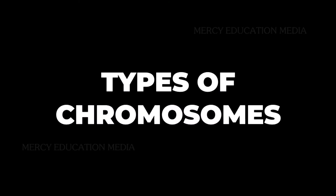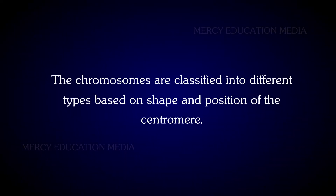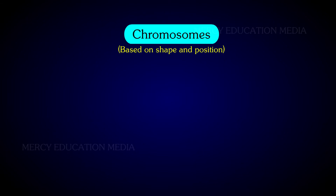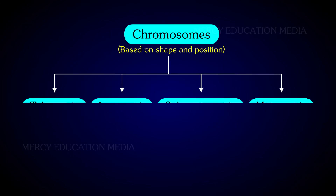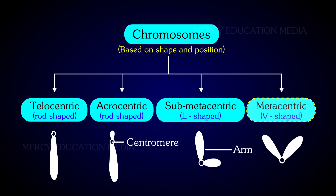Describe the types of chromosomes. Chromosomes are classified into different types based on shape and position of the centromere. According to the position of the centromere, eukaryotic chromosomes may be rod-shaped, i.e. telocentric and acrocentric, L-shaped submetacentric, and V-shaped metacentric.